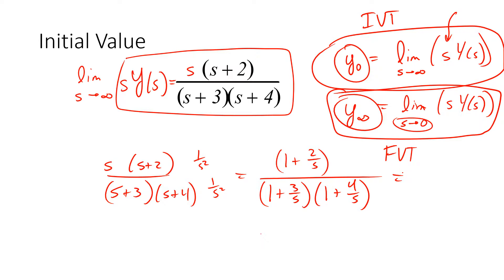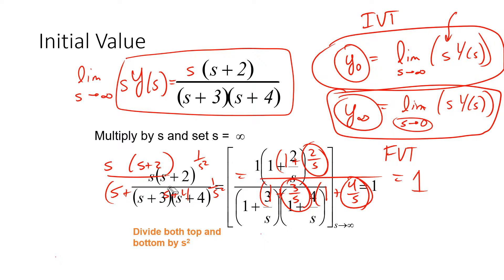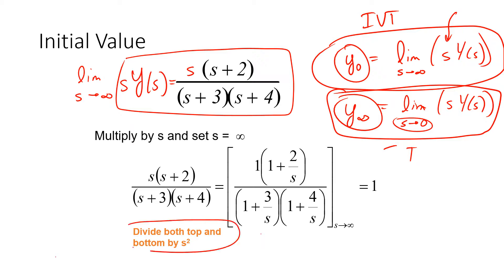The initial value theorem says that as s goes to infinity, all terms with s in the denominator go to zero. So I get an initial value of 1. Dividing the top and bottom by s squared gives a value of 1.